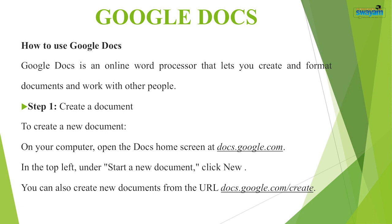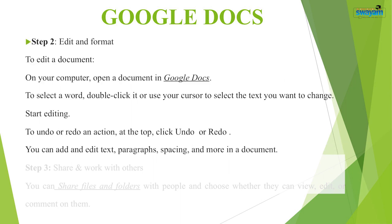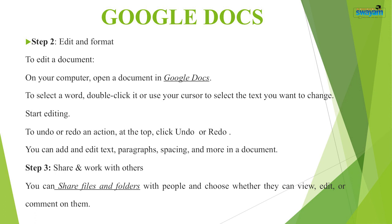Step 2 — Edit and format. To edit a document in Google Docs, open the document, double-click a word or use your cursor to select the text you want to change, and start editing. To undo or redo an action, click Undo or Redo at the top. You can add and edit text, paragraphs, spacing, and more. Step 3 — Share work with others. You can share files and folders with people and choose whether they can view, edit, or comment on them.